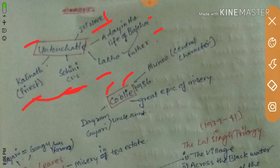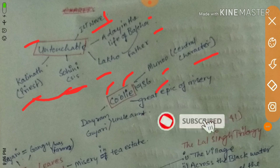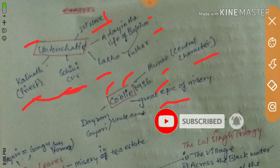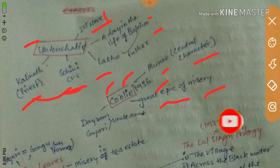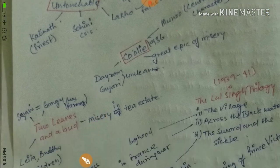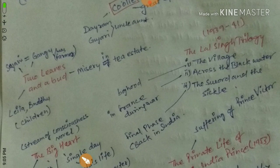In Coolie, Munoo is the central character. This work was published in 1936 and is described as a great epic of misery. Munoo has an uncle and aunt named Daya Ram and Gujri.